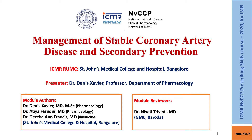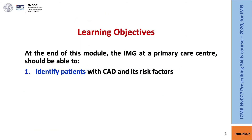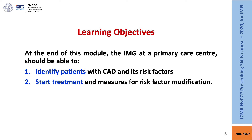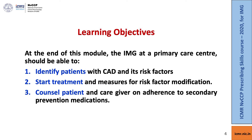These are our two module reviewers. At the end of this module, the Indian Medical Graduate at the primary care center should be able to: one, identify patients with coronary artery disease and its risk factors; start treatments and initiate measures for risk factor modification; and counsel patients and their caregivers on the adherence to secondary prevention medications.